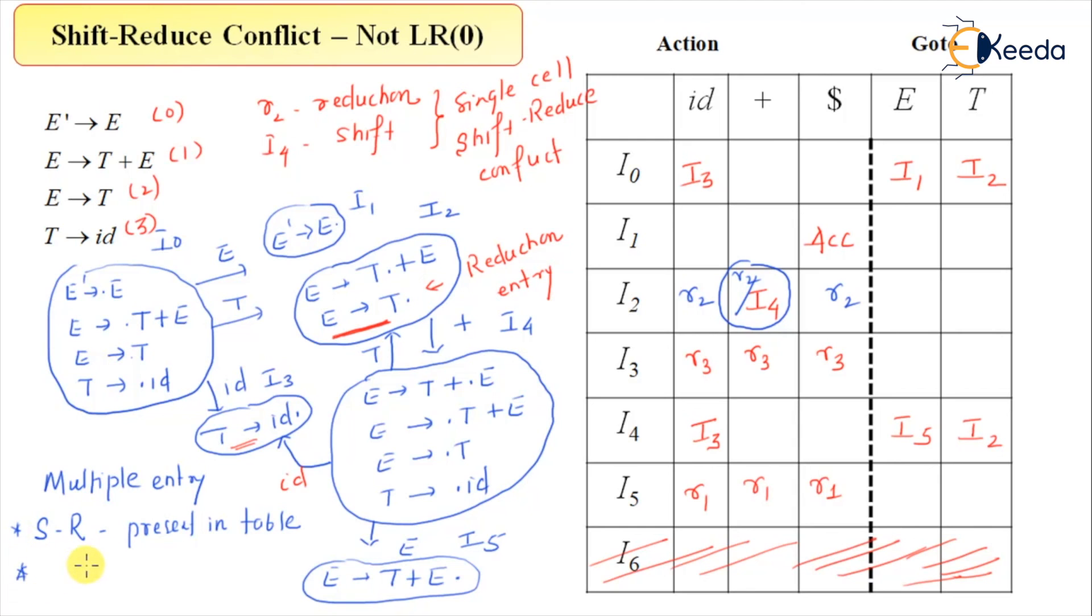Another situation for the multiple entry is R and R. That is called as reduce-reduce. Shift-shift is not a conflicting situation, and we don't have a multiple entry, reason that we send both of the inputs in a single state.